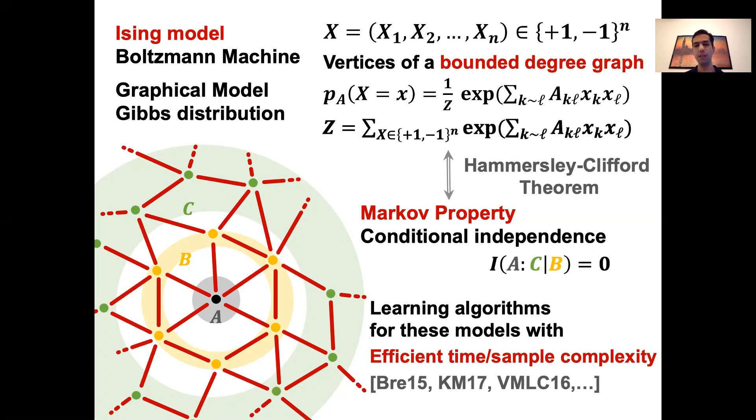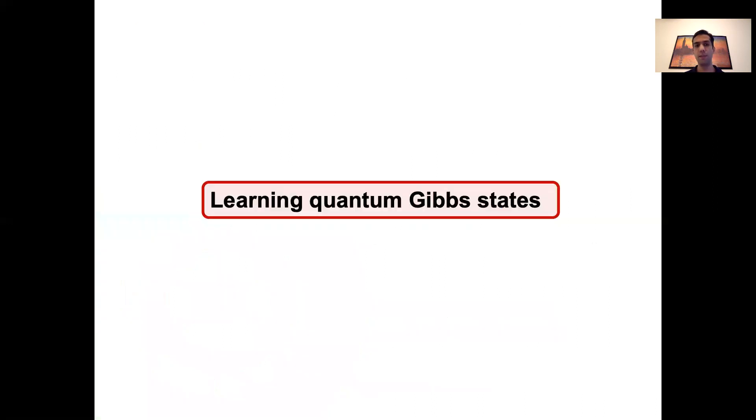And when it comes to learning, this property somehow allows us to learn the parameters locally and therefore efficiently. So this is all about classical probability distributions. And we have a detailed understanding of how we can efficiently learn these models. In this talk, I'll show you variants or generalizations of these models that appear in quantum physics and quantum computing. And due to their quantum nature, they exhibit interesting features that make devising learning algorithms for them very non-trivial.